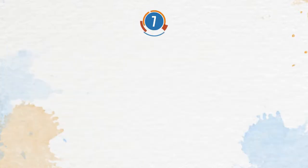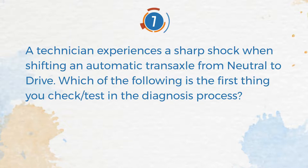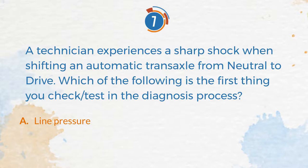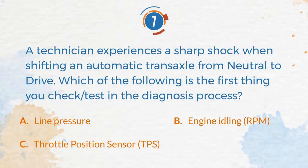Number 7. A technician experiences a sharp shock when shifting an automatic transaxle from neutral to drive. Which of the following is the first thing you check or test in the diagnosis process? A. Line pressure. B. Engine idling RPM. C. Throttle position sensor (TPS). D. Control valve assembly.